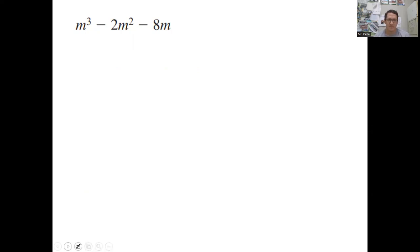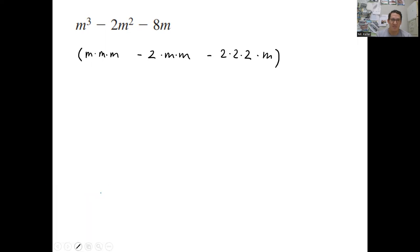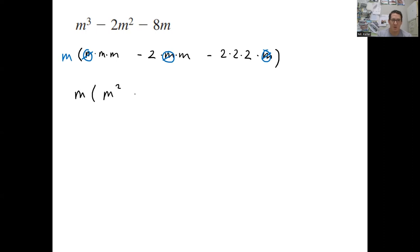We are going to skip over. No, we'll do this one. So m cubed is m times m times m minus 2m squared is m times m minus 8 is 2 times 2 times 2 times m. So looking at what they have in common, it looks like they just have an m. This one doesn't have a 2, so we can't take out any 2s. They just have the m. They each have an m. So we're going to take that out. And so clean that up a bit. So I have an m on the outside, m times m is m squared minus 2 times m is 2m minus 2 times 2 times 2.